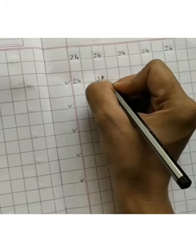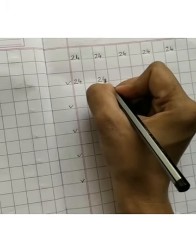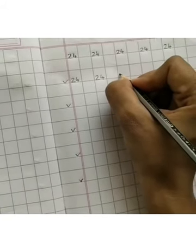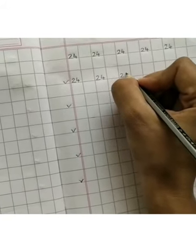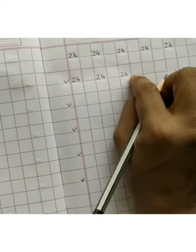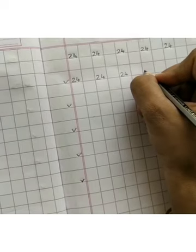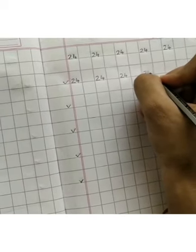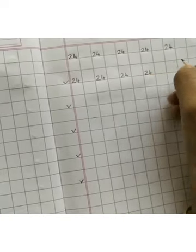24. Leave 1 box. 24. Leave 1 box. Children, you have to touch the line and write. Write in neat and clean handwriting. Okay?